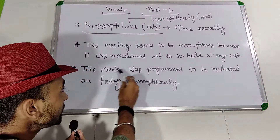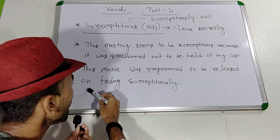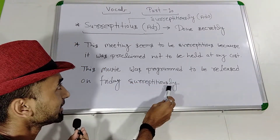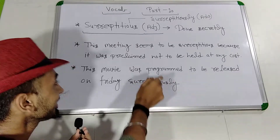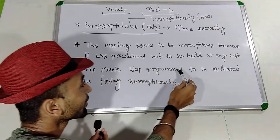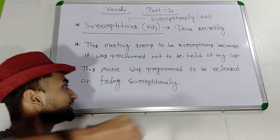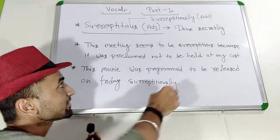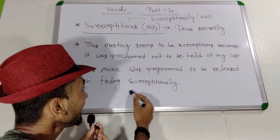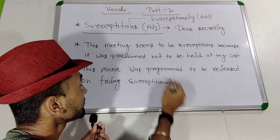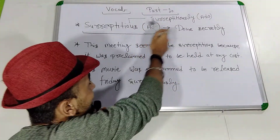Another example: 'This movie was programmed to be released on Friday surreptitiously.' Surreptitiously means something done secretly. Here I have used the adverb form. The base word is an adjective and this form is an adverb.